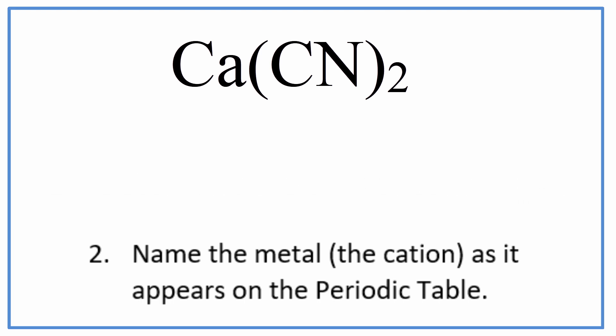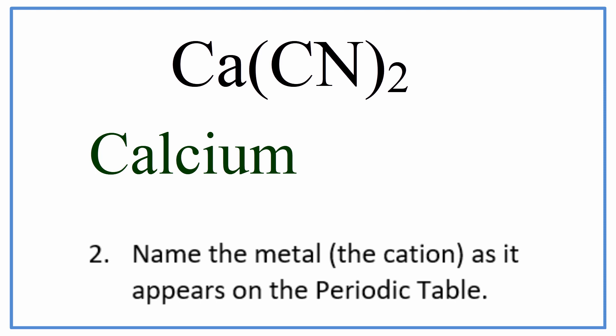Next, we'll write the name of the metal using the periodic table. For Ca, that's just called calcium. We write the name exactly as it appears on the periodic table.